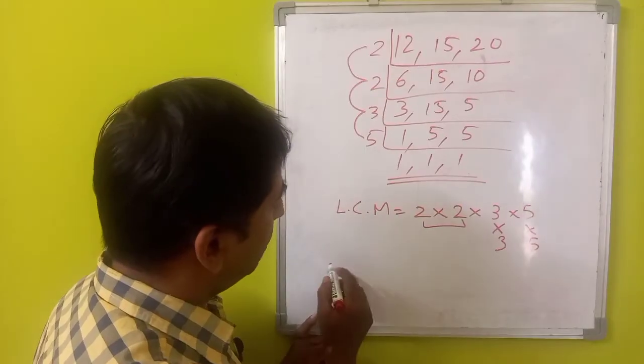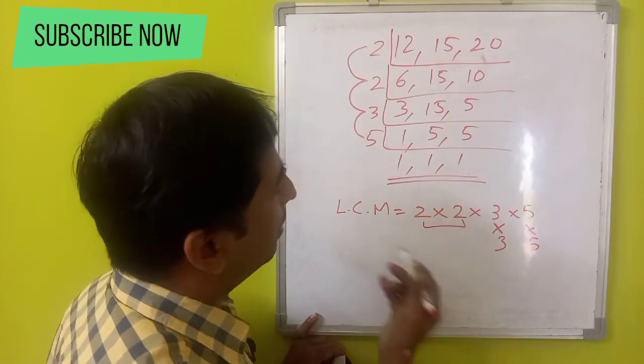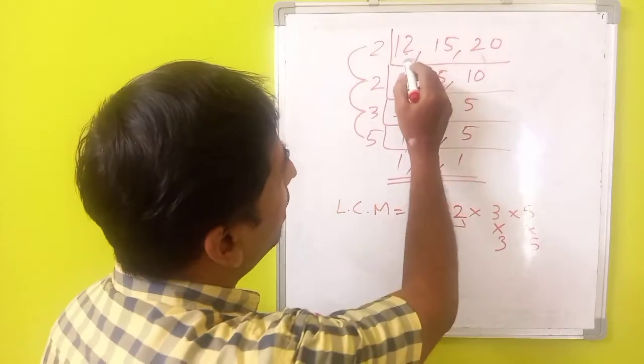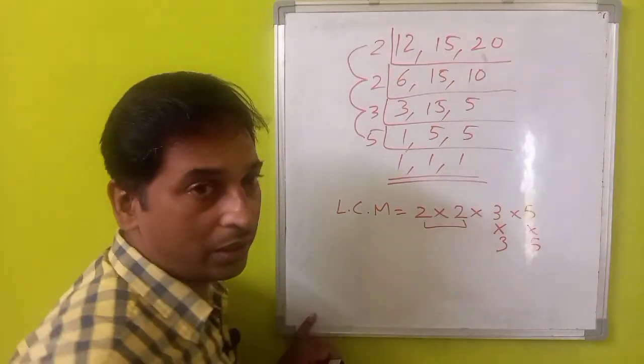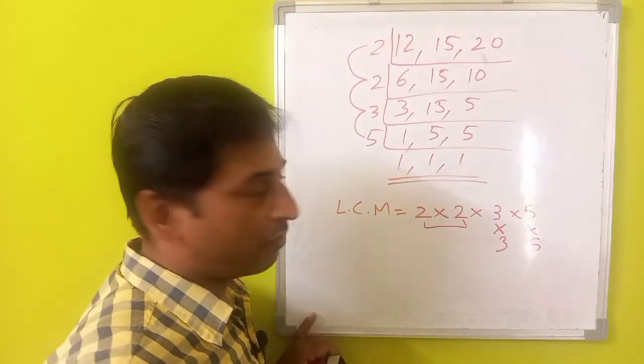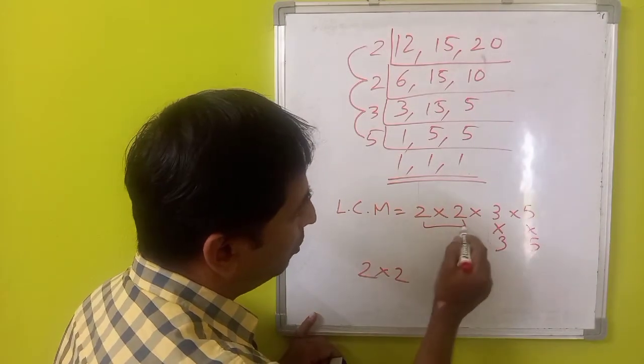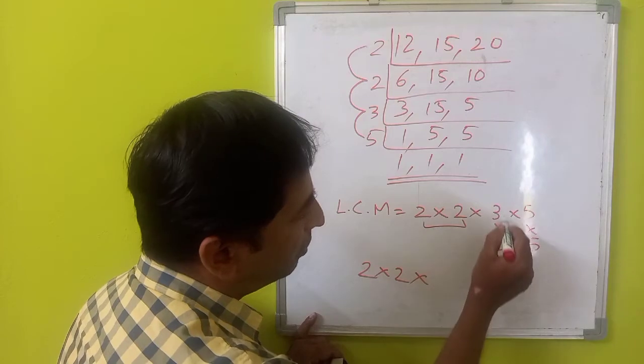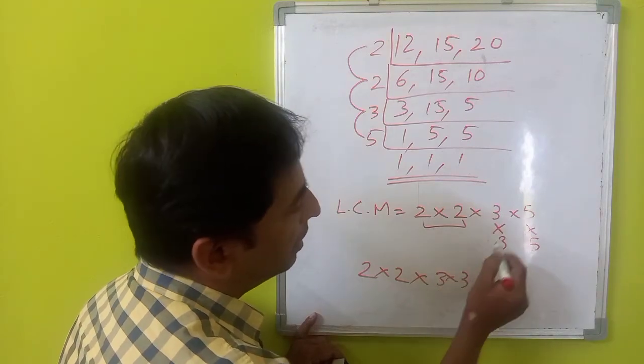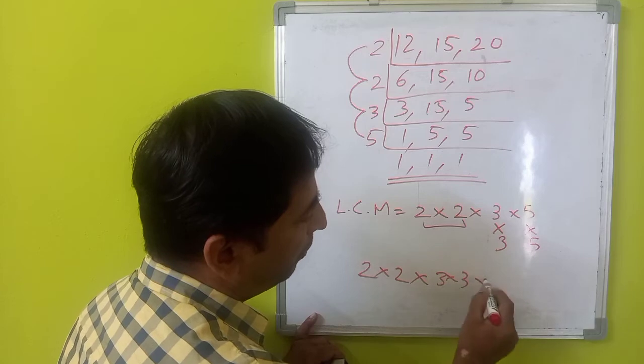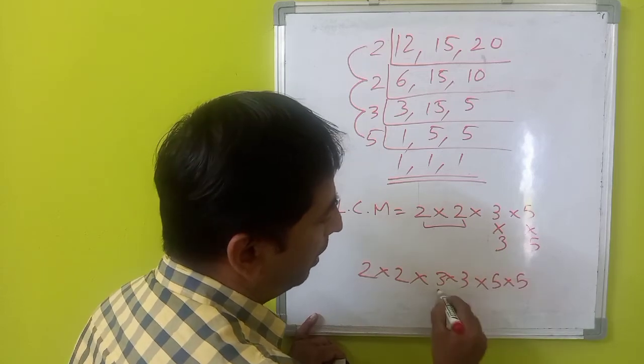So, the least number or the smallest number which is divisible by 12, 15 and 20 and is also a perfect square will be 2 multiplied by 2 which is in pair. Now, 3 multiplied by 3 which is again in pair and 5 multiplied by 5 which is again in pairs.